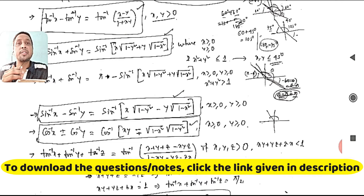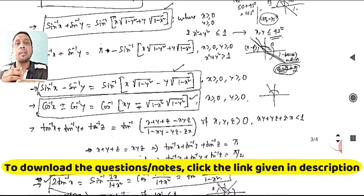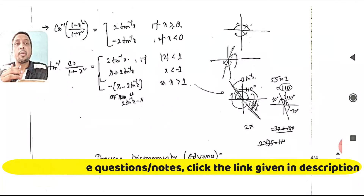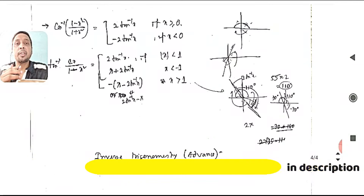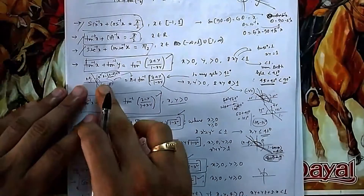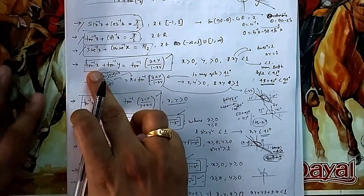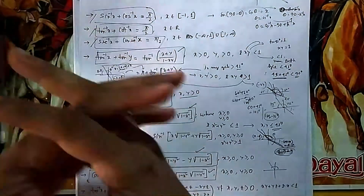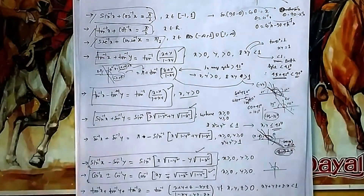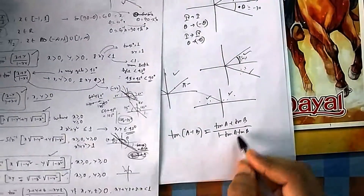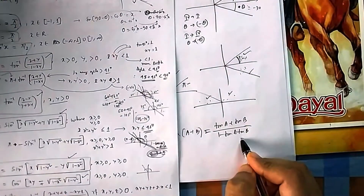We are in continuation with our discussions on various formulas of inverse trigonometry, seeing some typical cases where it differs from normal trigonometric equations. Now if you recall tan(a+b), you will see there is a symmetry between trigonometry and inverse trigonometry. Recall: tan(a+b) = (tan a + tan b) / (1 - tan a · tan b).